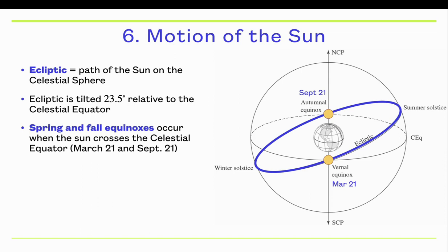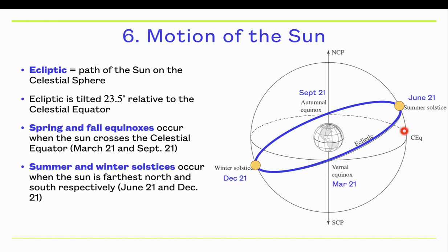We won't go into the origin of the seasons in detail here. When the Sun crosses the celestial equator — this happens twice — once when it's going from south to north, that happens in springtime on March 21st, and that's called the vernal or spring equinox. Then again in the autumn the Sun will pass from the north to the south hemisphere, and that happens on the autumnal or fall equinox on September 21st. The solstices are when the Sun is farthest north in the celestial sphere — that happens on June 21st, the summer solstice — and when it's farthest south, that's the winter solstice on December 21st.